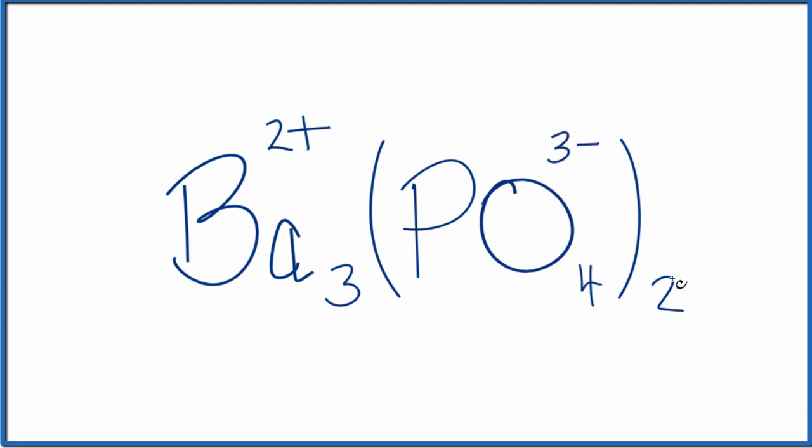So you can see we have two of them. 2 times 3- is 6- here, and 3 times 2+ is 6+ here. Net charge is 0. It's an ionic compound.